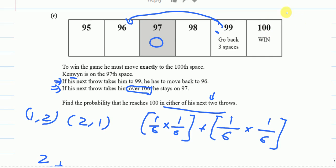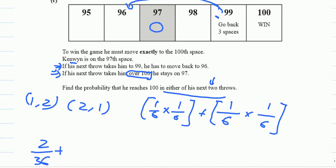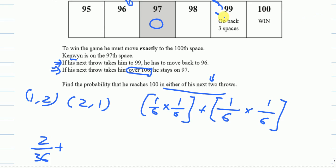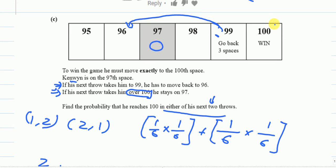If I get more than 4 I will stay on 97. That's my first throw. And on the second throw because I am still on 97, I will get a 3. For the 3 we have already found the probability. So here we just need to find the probability of getting more than 3.